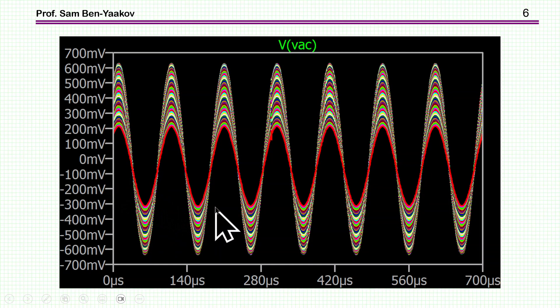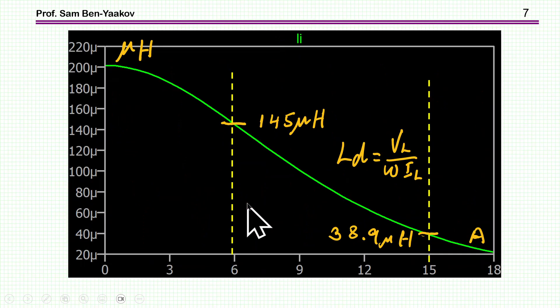As we sweep the current, the DC current, we get a voltage across the inductor which is going down with the current, of course. This is time, and these are the runs for different DC current. Then summarizing all this, which is a feature of LTSpice, and plotting it as a function of the current, we have now the differential inductance.